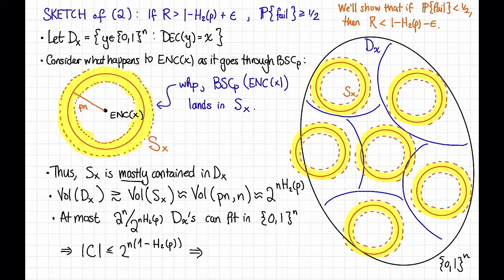And then we can get a bound on the rate of the code. Remember that the rate is defined as the log base 2 of the size of C divided by n. So that's just this bit up here. So the rate is at most, up to some squiggly squigglies, 1 - H_2(p).